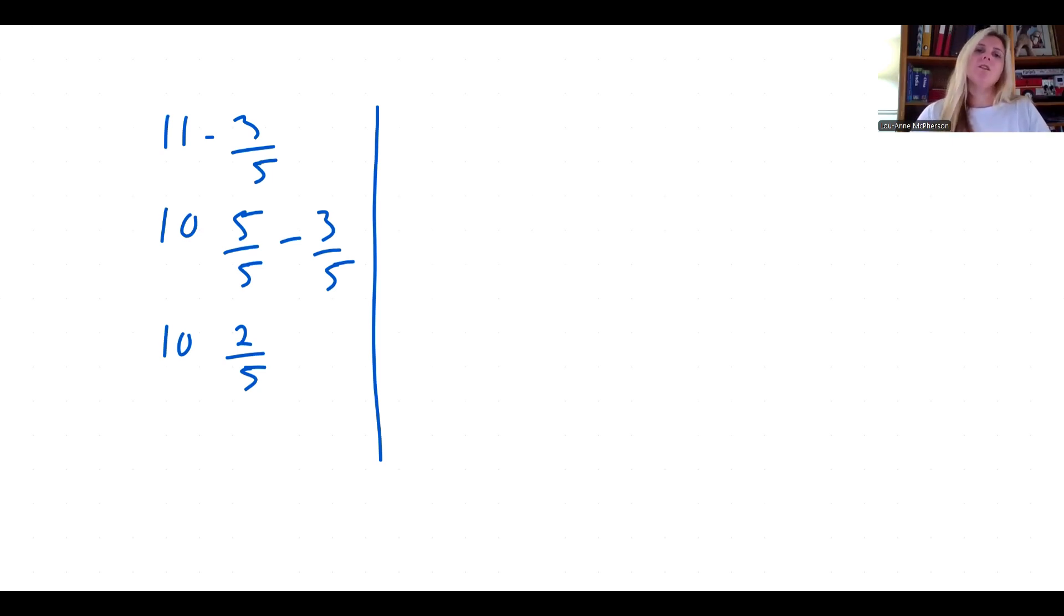So the question is 11 minus 3 fifths. In order to subtract the fraction you have to regroup the whole number into a mixed number which is a whole number and a fraction. So to do that you borrow one from the whole number and that will leave you with 10 and 5 fifths minus 3 fifths. From there you go ahead and subtract the 3 fifths from the 5 fifths which leaves you with 10 and 2 fifths.